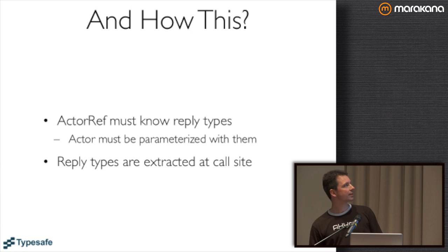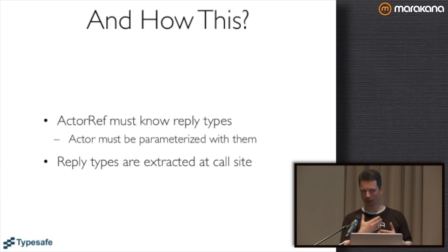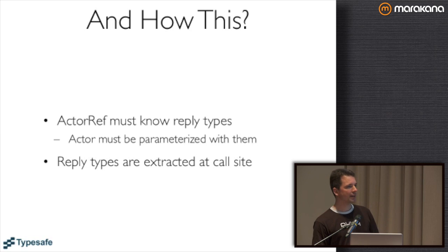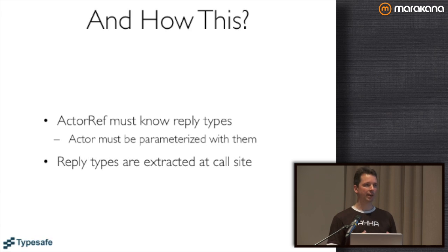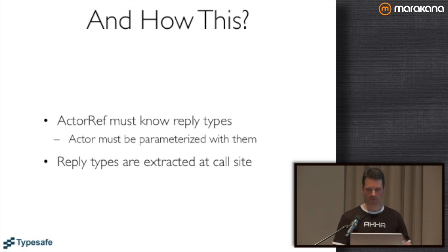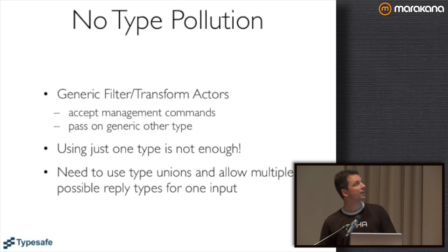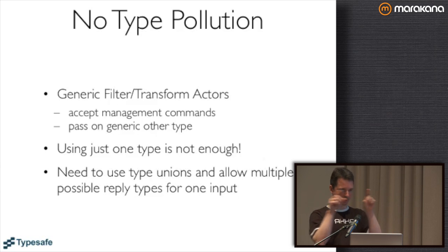What that needs is that the actor ref not only needs to know about the input message type - it also needs to know what possible reply type might be. And that again means that the actor trait needs to be parameterized with these types. And then at the call site of the ask operation, we can extract the reply type out of this ref to get you the right future, or to check that an actor will actually be able to understand the response. There is one problem if we just allow one type though - if we say we have a new actor ref which takes a T and gives you back a U.